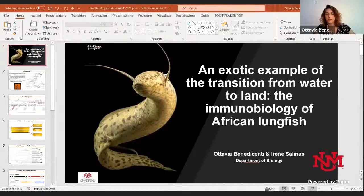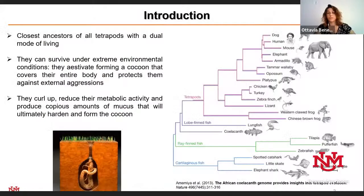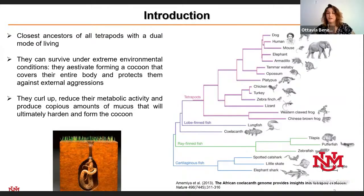Thank you and good afternoon. Today I'll present a great example of a living fossil. I'm a postdoc at the Renaissance Lab. The lungfish is a so-called living fossil because, as you can see from the phylogenetic tree, it's really ancient — it appeared about 400 million years ago, compared to humans who appeared 85 million years ago. The lungfish is the closest ancestor of all tetrapods, making it an important example of the transition from water to land.